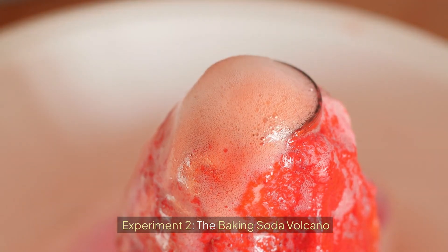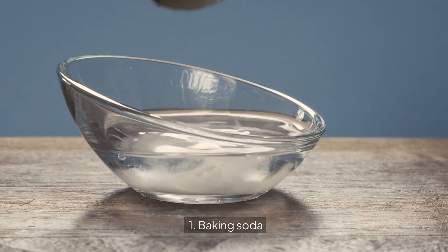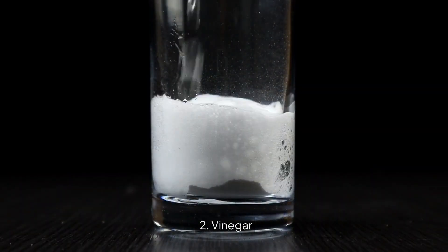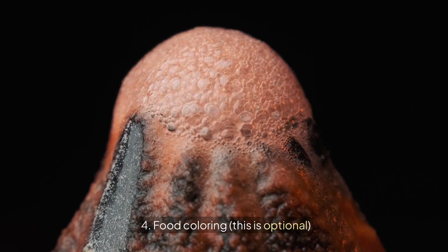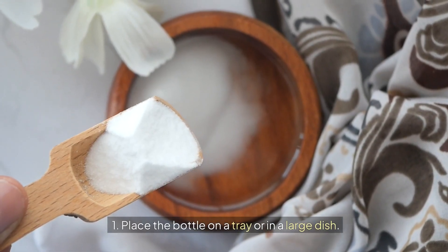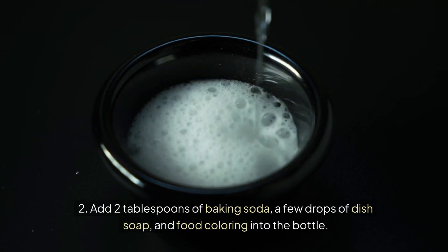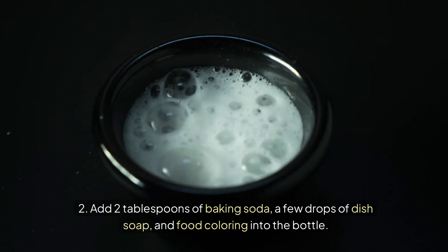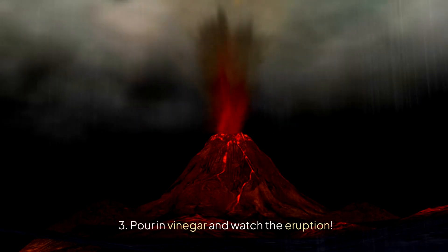Experiment 2: The baking soda volcano. Supplies: baking soda, vinegar, dish soap, food coloring (optional), and a small plastic bottle. Steps: Place the bottle on a tray or in a large dish. Add 2 tablespoons of baking soda, a few drops of dish soap and food coloring into the bottle. Pour in vinegar and watch the eruption.